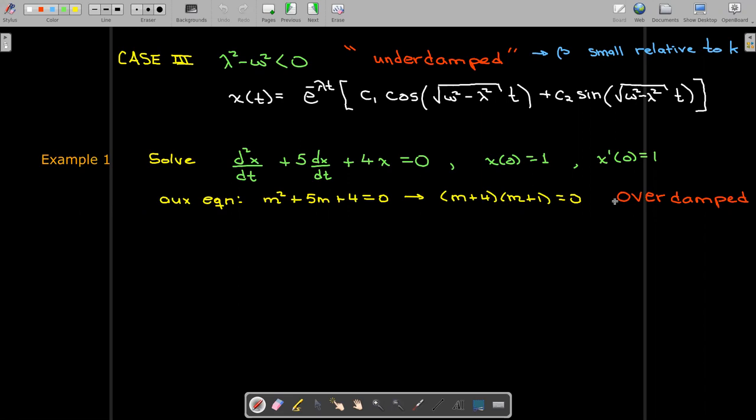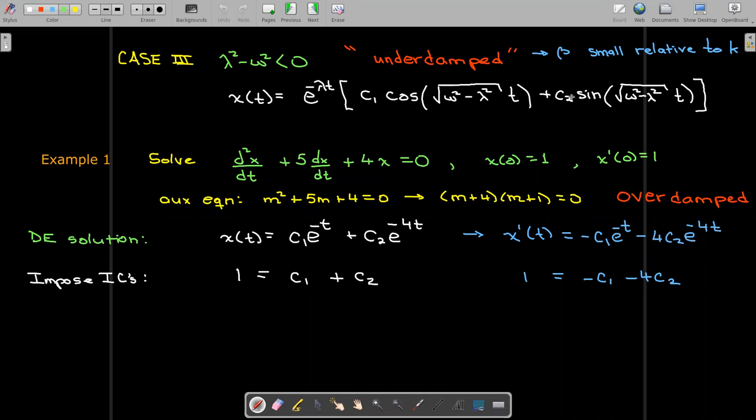So if I look at the auxiliary equation, we can get two real distinct roots. This is an overdamped system, and so our solution to the DE is the sum of these two exponential functions, and we can evaluate the initial conditions or impose the initial conditions to find the value of the constants. The second initial condition relies on the first derivative, so we'll go ahead and take that first derivative. We get a system of equations here where c1 and c2 are the variables, and from that system, we can find that c2 is negative 2 thirds and c1 is 5 thirds. And that gives us the equation of motion.